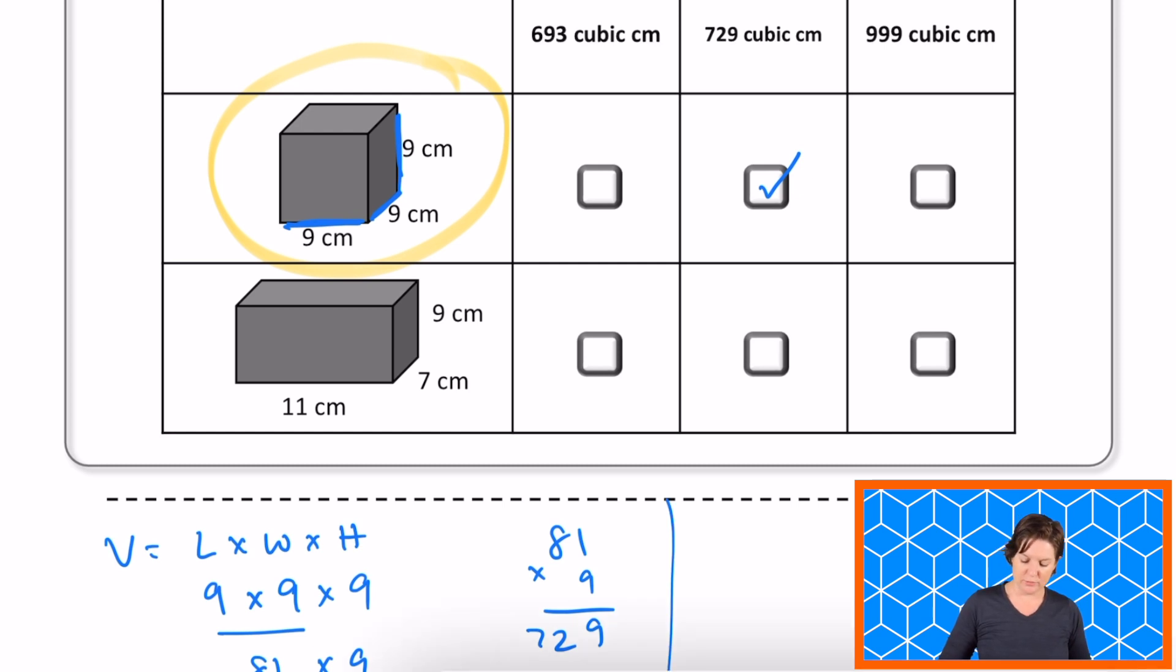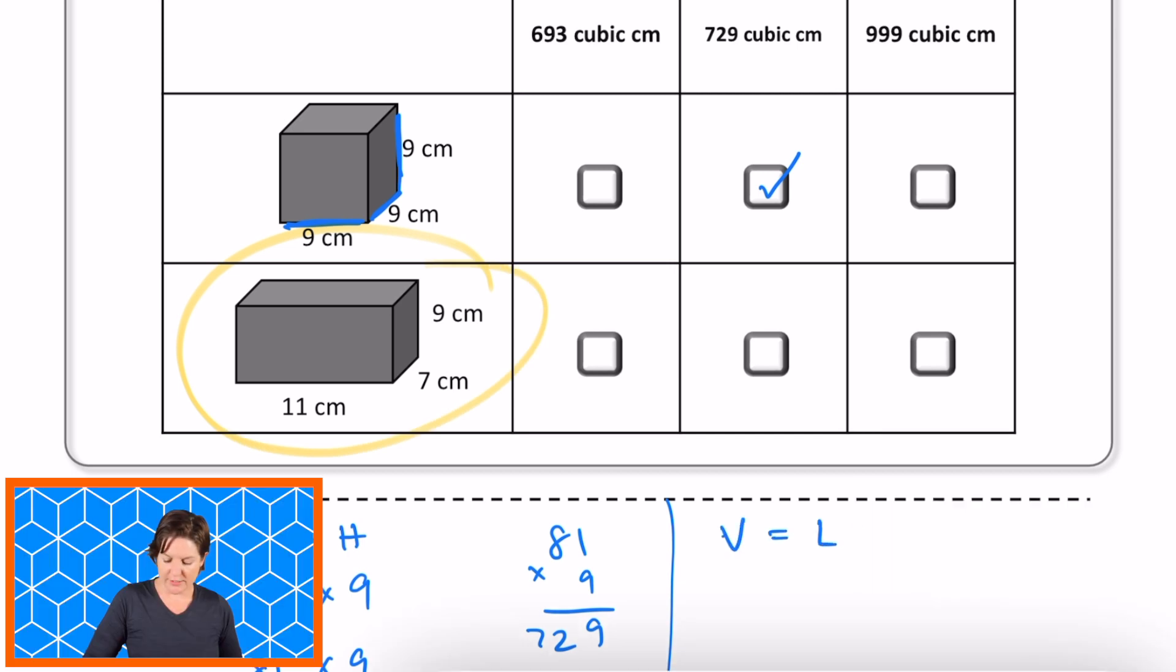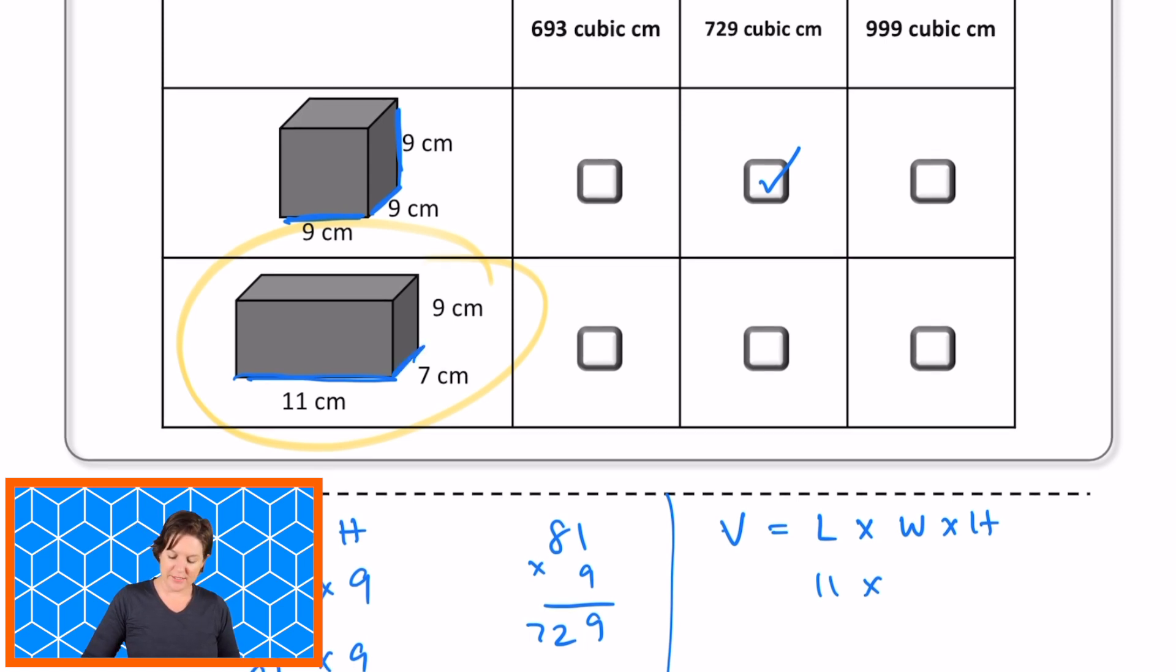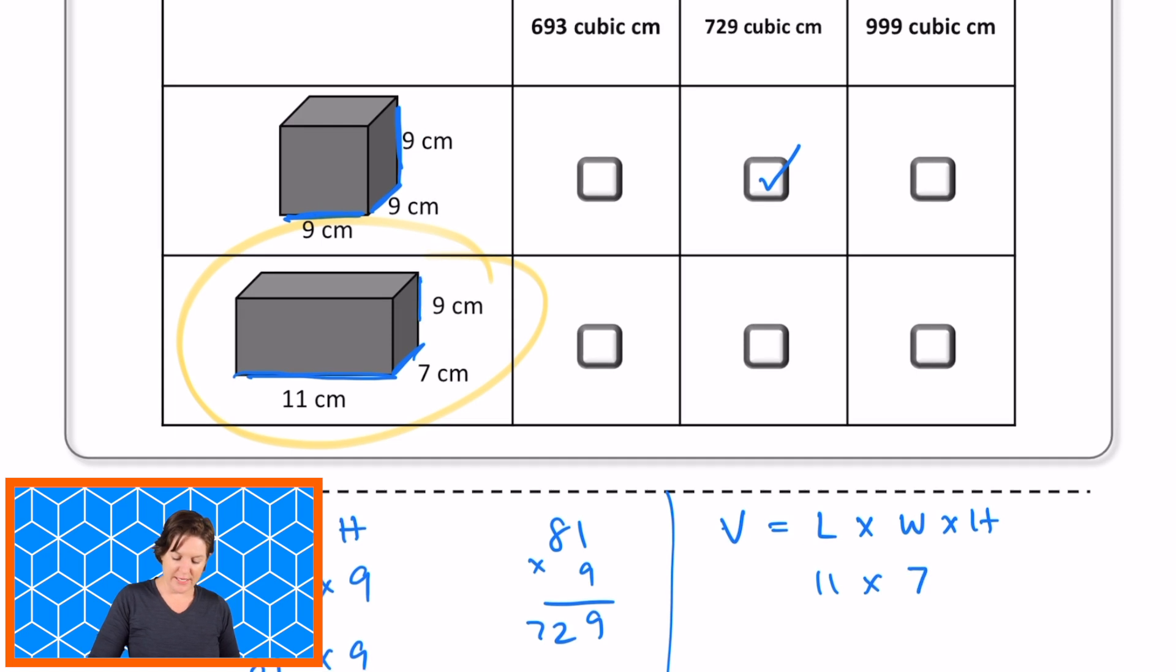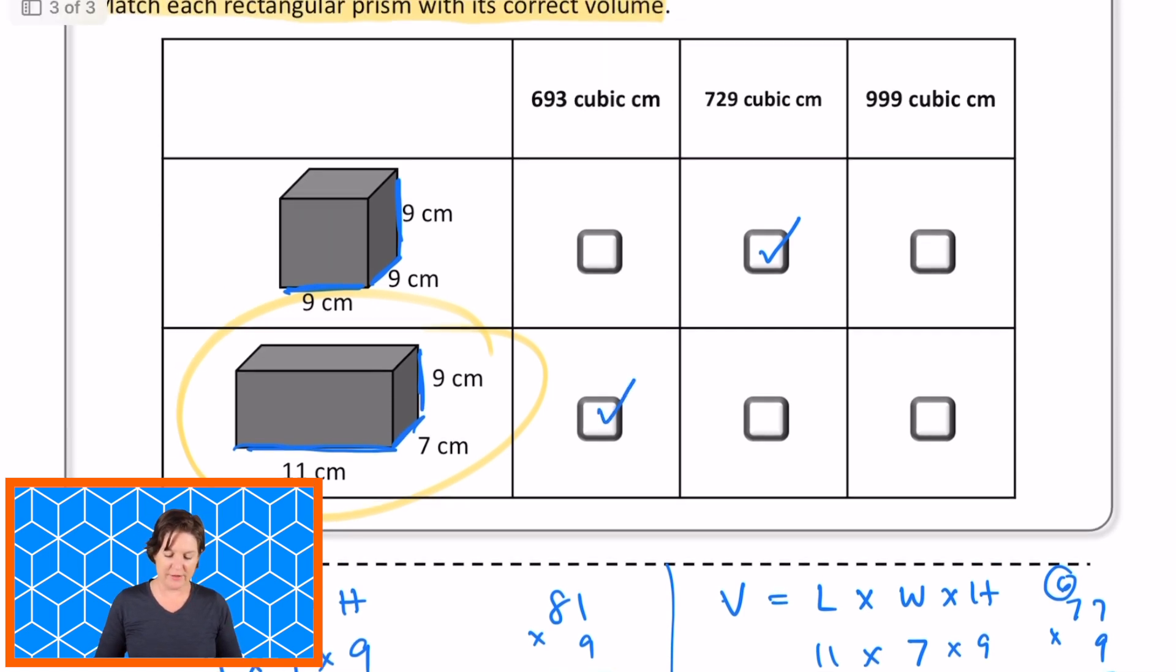Next, finding the volume of the second one. Same formula here. Volume equals length times width times height. The length is 11 cm. The width is what? 7 cm. That makes the height 9 cm. 11 times 7 equals what? 77. So, 77 times 9. Let me bring that over. 7 times 9 is 63. And 9 times 7 is also 63, plus 6 is 69, which would be 693 cubic centimeters, that first one right there.